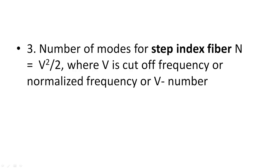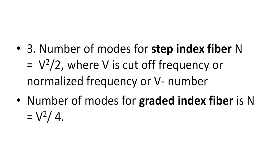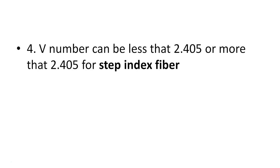For the step index fiber, the number of modes that can travel is equal to V² / 2, where V is the cutoff frequency, or normalized frequency, or V number — as discussed in the last lecture. But in the case of graded index fiber, it is V² / 4. For monomode fiber, the V number is less than 2.405, and for graded index fiber, V is greater than 2.405. Since step index fiber is of both types — monomode and multimode — the V number can be less than or greater than 2.405 for step index fiber.